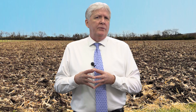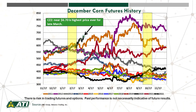Let's wrap things up this week looking at trends in December corn futures. We continue to see December corn futures charge higher — currently trading at the highest level ever for late March, near $6.70 a bushel. We strongly encourage you to work closely with your trusted risk management advisor to manage new crop production.